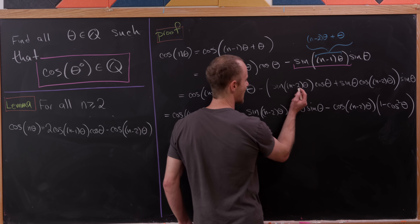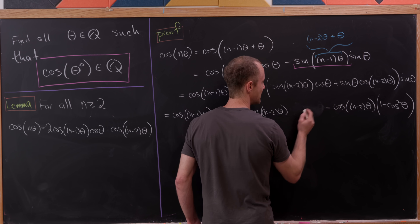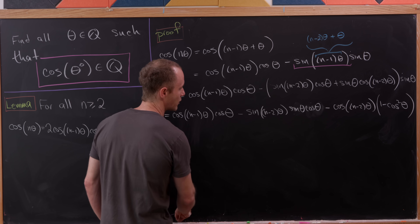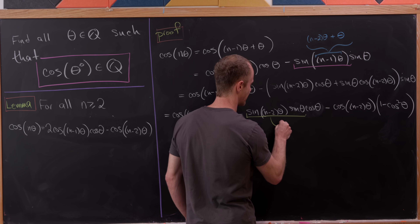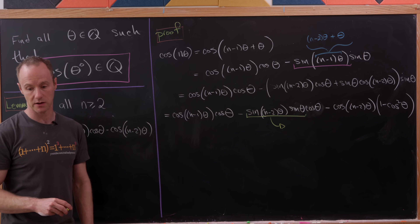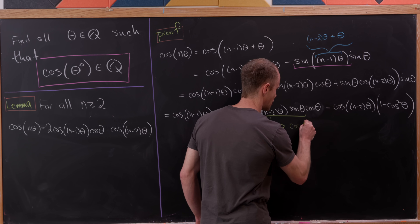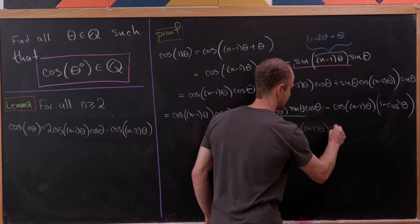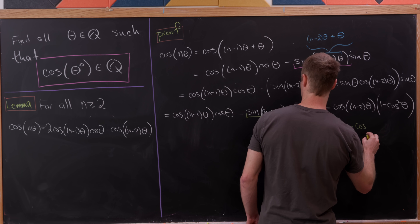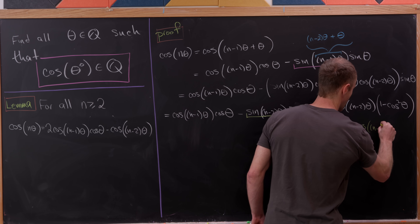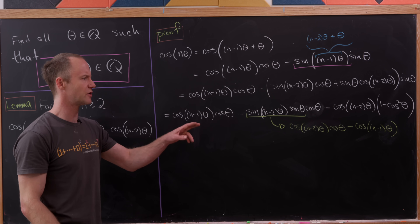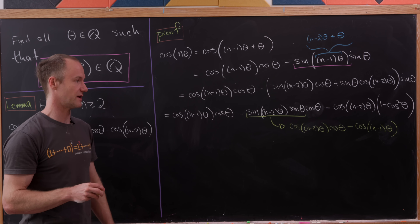From here, we take the cos(θ)·sin(θ) term and reverse the order to sin(θ)·cos(θ), then apply the angle sum formula for cosine in reverse on the underlined term. This allows us to write that piece as cos((n−2)θ)·cos(θ) minus cos((n−1)θ) — that's just the angle sum formula for cosine rewritten.